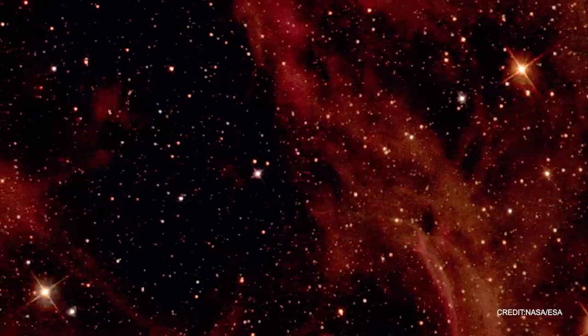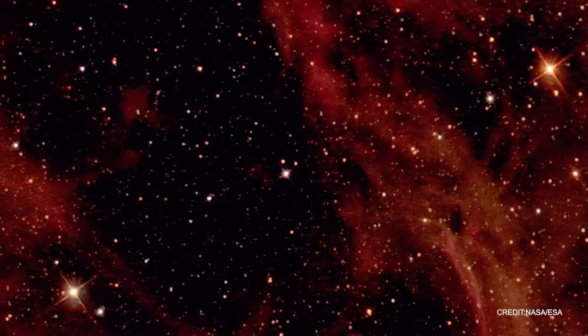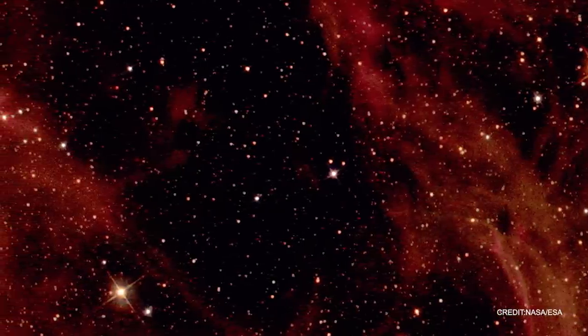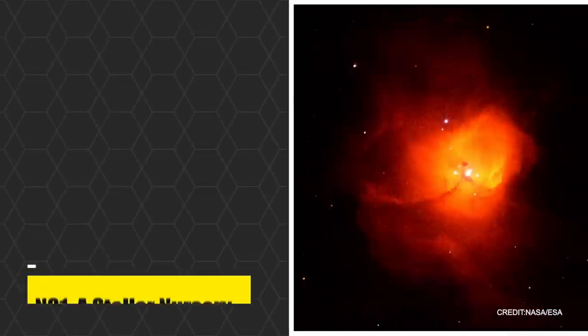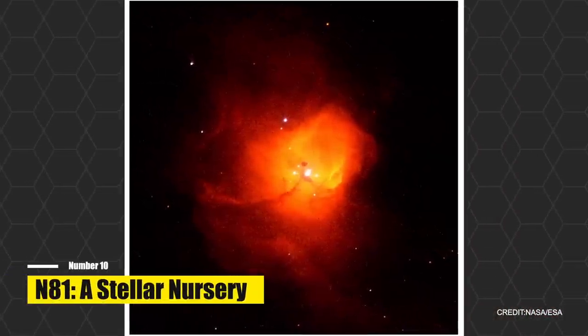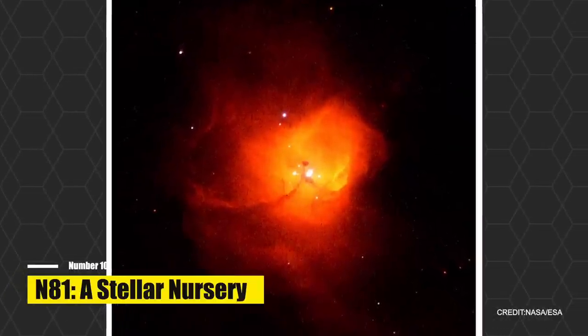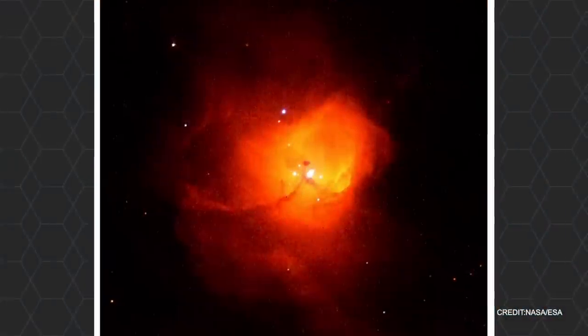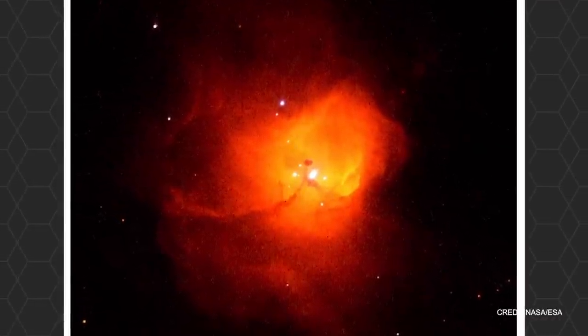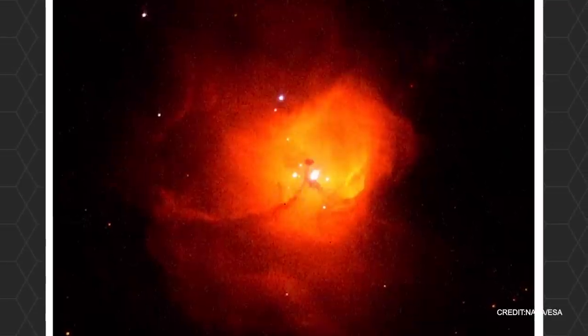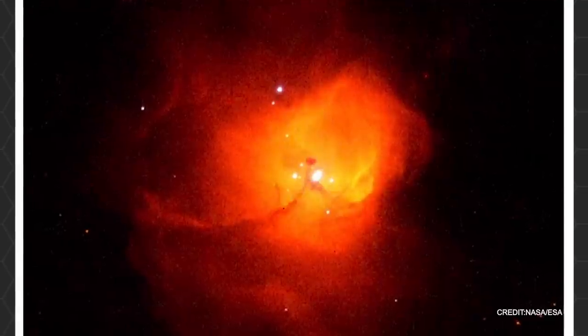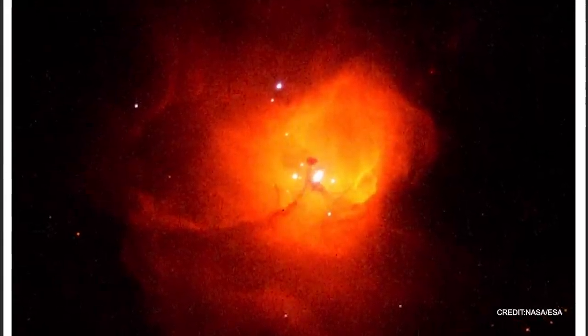Number ten, N81, A Stellar Nursery in the Small Magellanic Cloud. Venture 200,000 light-years into the cosmic wilderness, and you'll find an exquisite tableau of stellar creation and progress. Welcome to N81, a stellar nursery cradling a family of youthful, incredibly luminous stars. This celestial incubator, nestled within the Small Magellanic Cloud, SMC, is part of our galactic family, being an irregular satellite galaxy of the Milky Way. The scene is set in the southern constellation of Tucana.